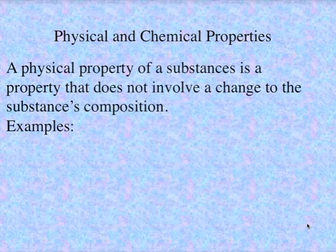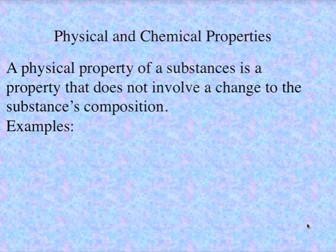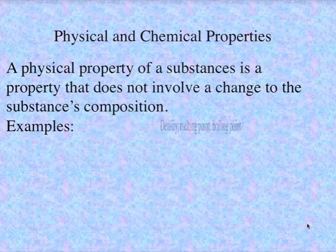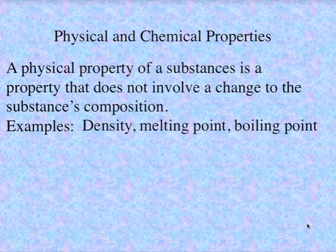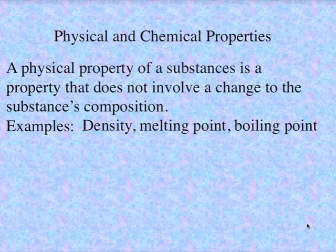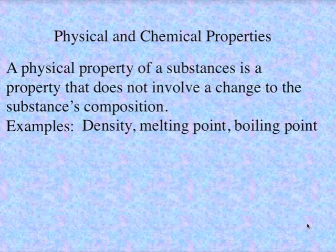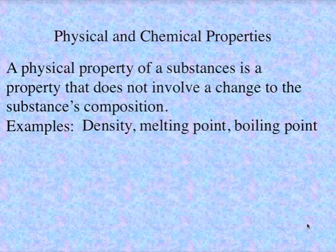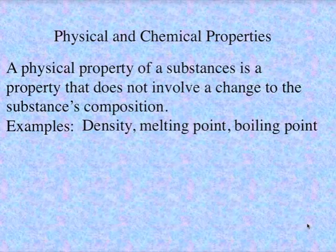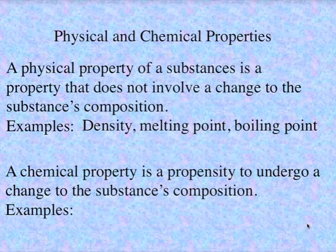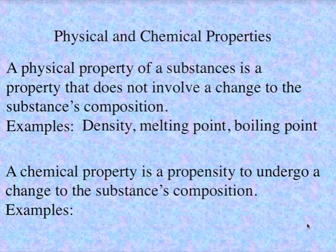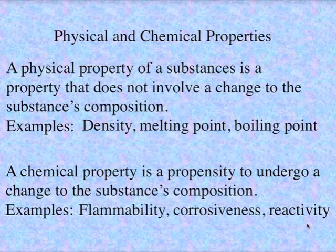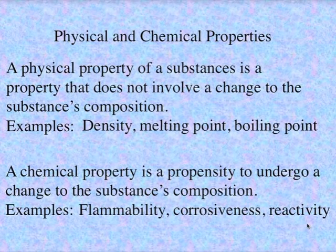Alright, now speaking about properties, chemical and physical properties, we say that a physical property of a substance is a property that doesn't involve a change to the substance's composition. So what are some examples of a physical property? Well, things like density, melting point, boiling point, these are physical properties. Each substance has its own density, its own melting point, its own boiling point. And those are the physical properties that don't involve a chemical change. And of course, a chemical property is a propensity to undergo a change to the substance's composition. So what are examples of chemical properties? Flammability, corrosiveness, reactivity, all of these are examples of chemical properties.